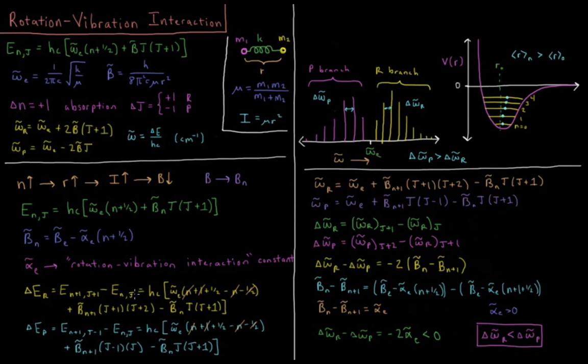In the P branch, we're going from n j to n plus 1 j minus 1. That gives us a frequency of absorption of omega e plus b bar n plus 1 j times j minus 1 minus b bar n j times j plus 1.